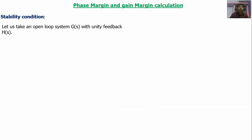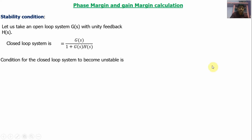If we note the open loop system G(s) and H(s), the closed loop system is G(s) divided by 1 plus G(s)H(s), because the feedback is unity negative feedback. When the closed loop denominator part equals zero, the output will be infinite, so the closed loop system will definitely be unstable.